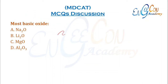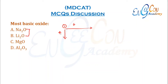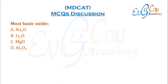Most basic oxide: moving along a period, the basicity of oxides decreases; moving down a group, basicity increases. Group 1 oxides are the most basic. Between the two Group 1 options, the lower the oxide in the periodic table, the more basic it is. So Na2O is the correct option.